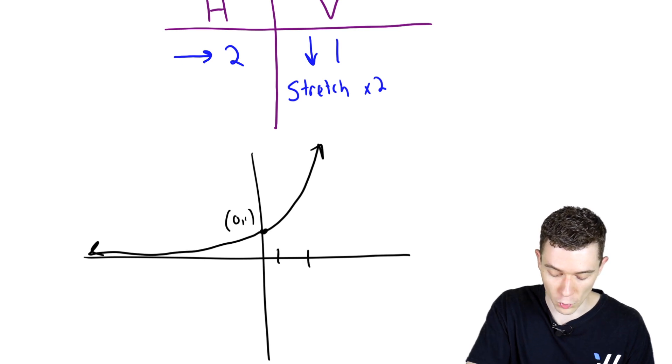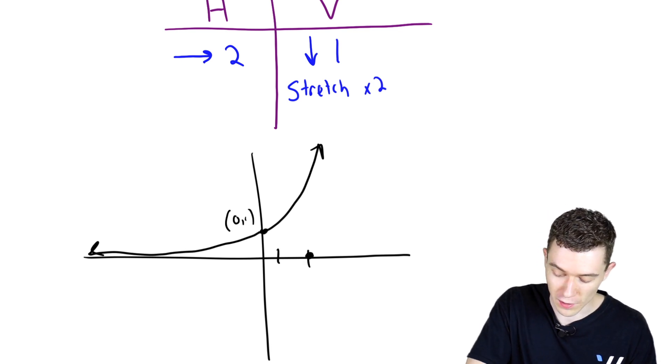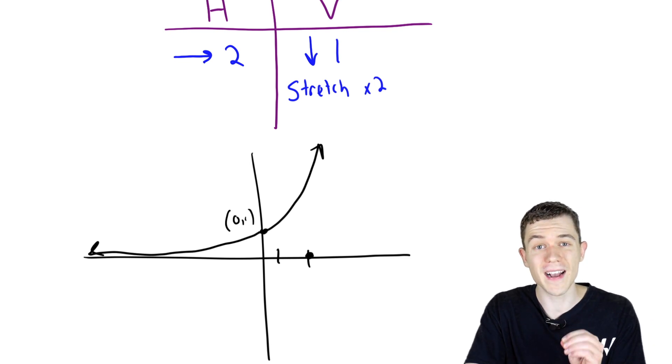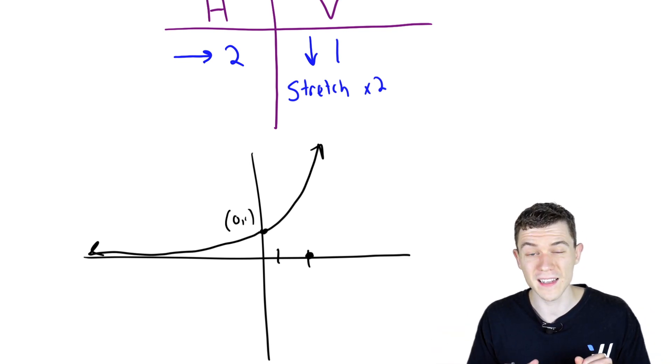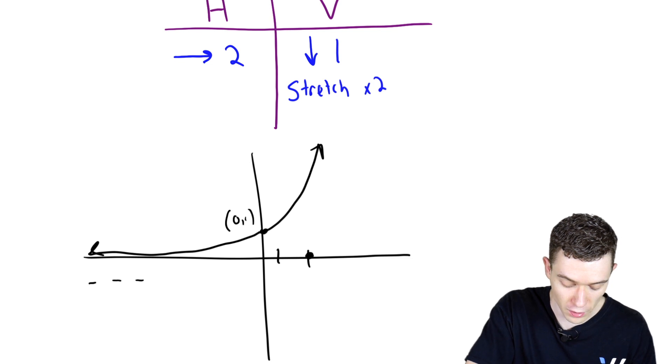And then we had that horizontal asymptote originally at the x-axis along y equals zero. Now it's along the line y equals negative one.